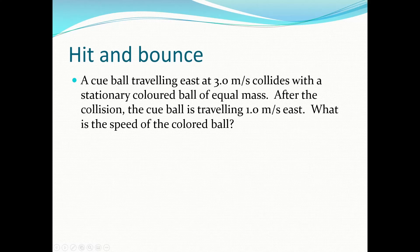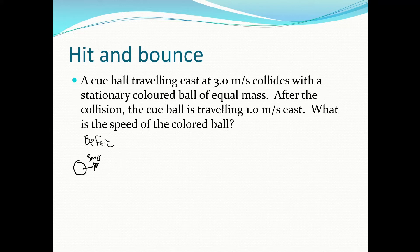Another type of example is a hit-and-bounce: a cue ball traveling east collides with a stationary colored ball of equal mass. After the collision, the cue ball is traveling 1 m/s east. What is the speed of the colored ball? Draw it: before, the cue ball moves east at 3 m/s and the 8-ball is stationary; after, we need to find the 8-ball's speed.